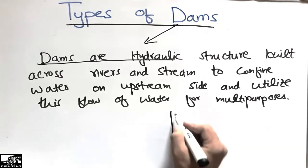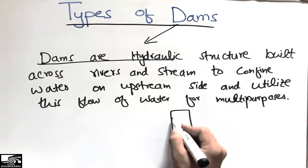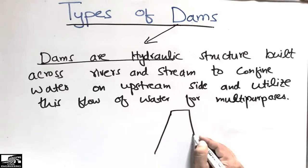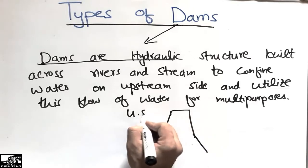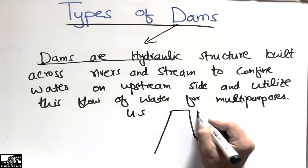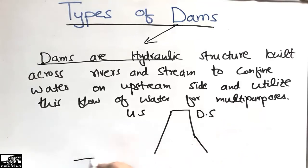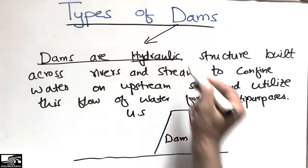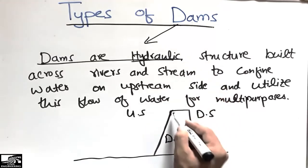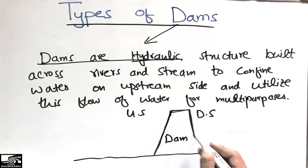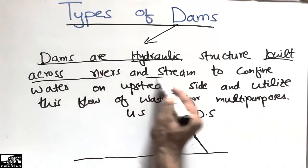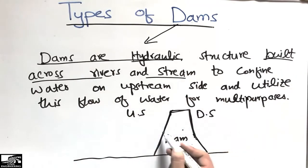I will draw it here. Consider this is a dam — this is the upstream of the dam and this is the downstream of the dam. These are hydraulic structures, meaning they are going to resist the water.